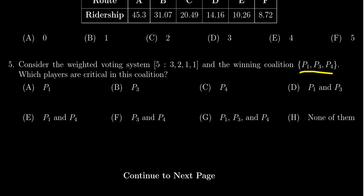And we're supposed to determine in this winning coalition which of the players are critical. Now remember, a critical player is a player which, if removed from the coalition, switches it from a winning coalition to a losing coalition.